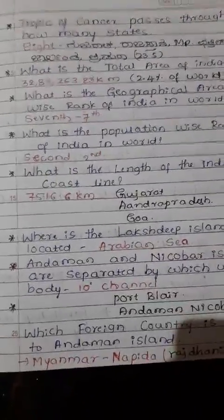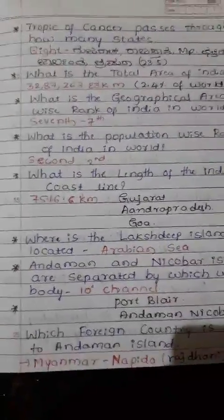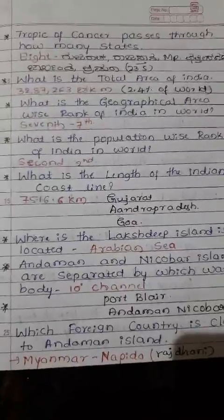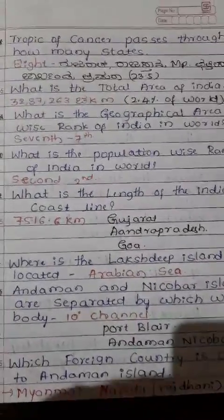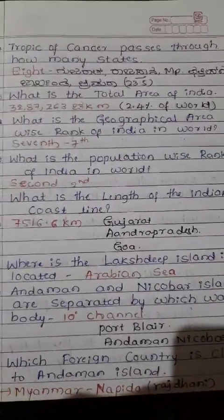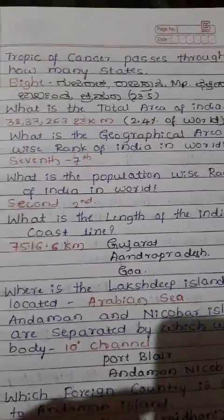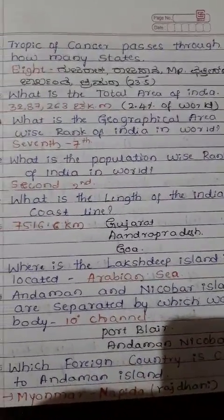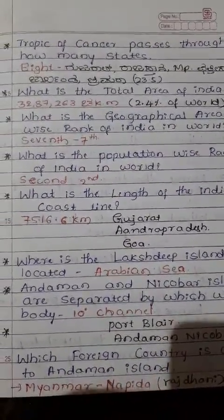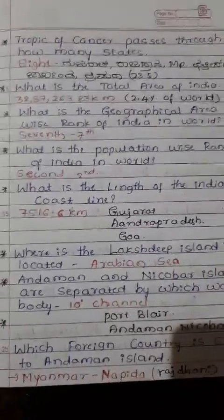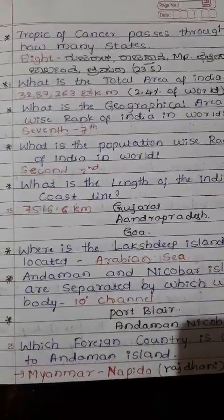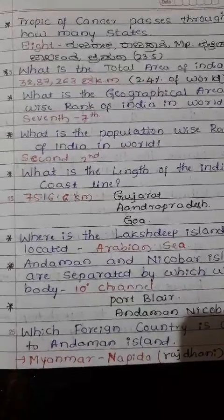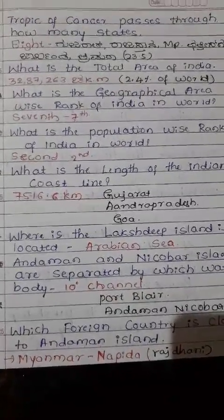Hello, good evening students. In this video I am going to explain important GK questions for all competitive exams. The Tropic of Cancer passes through how many states? Eight states: Gujarat, Rajasthan, Madhya Pradesh, Chhattisgarh, Jharkhand, and Tripura. What is the total area of India? 32 crore 87 lakh 263 square kilometers.